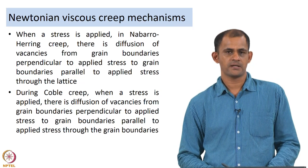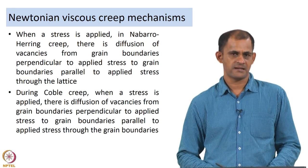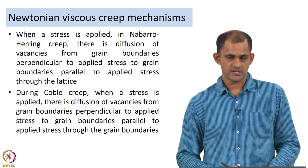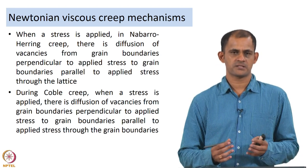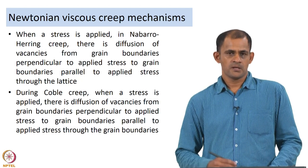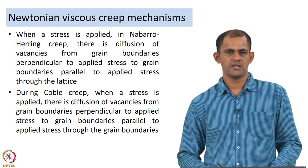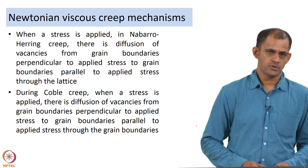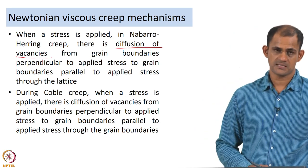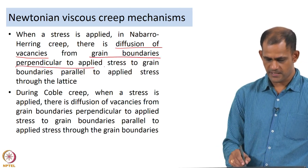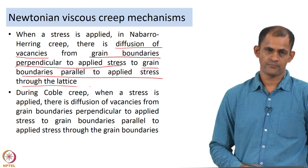What happens in Nabarro-Herring and Coble creep? We are talking about diffusion of vacancies. When a stress is applied under certain combinations of stress and temperature, there is diffusion of vacancies from grain boundaries perpendicular to the applied stress to grain boundaries parallel to the applied stress. In Nabarro-Herring creep, this diffusion takes place through the lattice — through the bulk of the crystal.